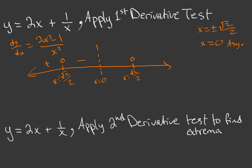For x between 0 and √2/2, say x = 0.1, we get 2(0.01) − 1, which is again negative — this is essentially an even function so the sign is the same. For x greater than √2/2, say x = 100, the numerator is a large positive number, so f' is positive. So our signs across the four intervals are: positive, negative, negative, positive.